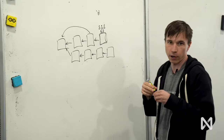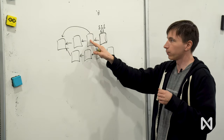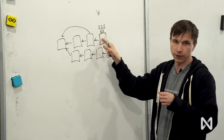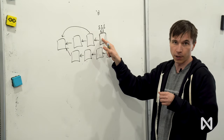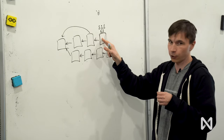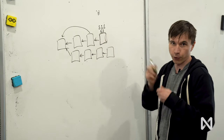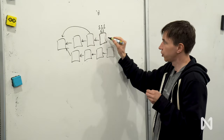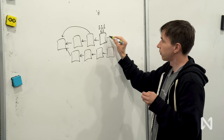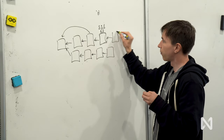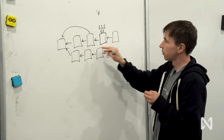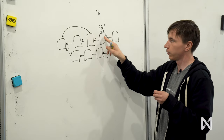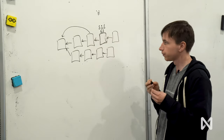Right now in our current implementation, the parent block must immediately precede the block that contains the approval. But we don't rely on that requirement anywhere — it's just an implementation detail. In general, in the future, it could be that approvals with a particular parent block are not included in the immediately following block but included later.